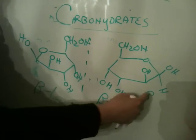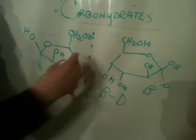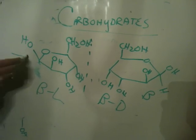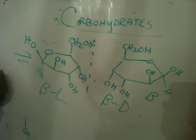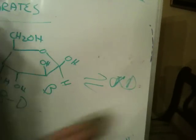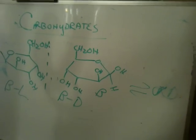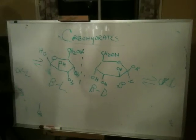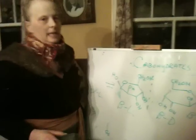I could also draw the mirror image of the alpha if I wanted to — the alpha is in equilibrium with it all the time. So this is in equilibrium with the alpha L, and this is in equilibrium with the beta D, the alpha D. Think about that and try one on your own — just pick a sugar off the table and try it on your own. I'll see you in class.